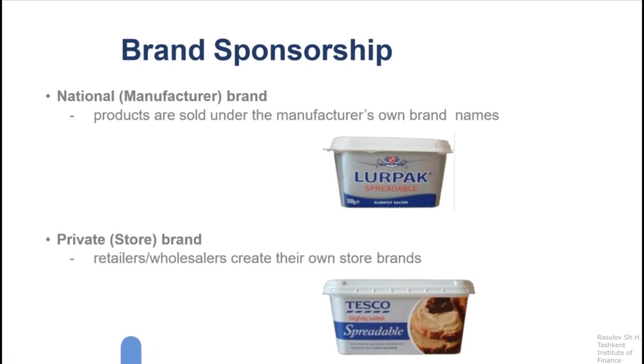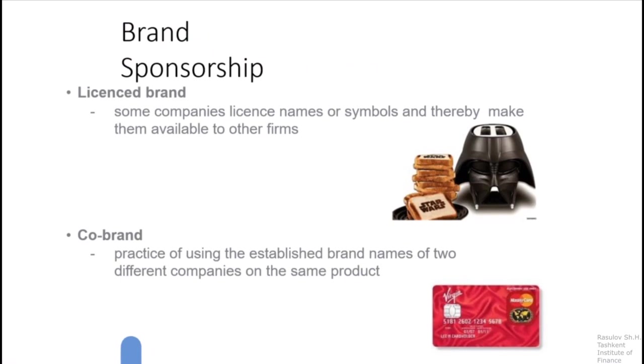As you can see, Lurpak is the national manufacturer's brand, which sells its product through the Tesco brand in Tesco stores — it contains the same product inside the container. Licensed brands: some companies license names or symbols, making them available to other firms' products. Other firms purchase licensed brand names to produce their own product under those well-known brand names, mainly to decrease marketing and promotion expenses.